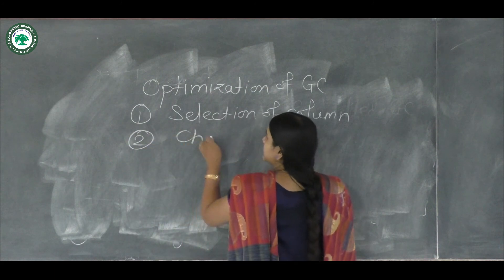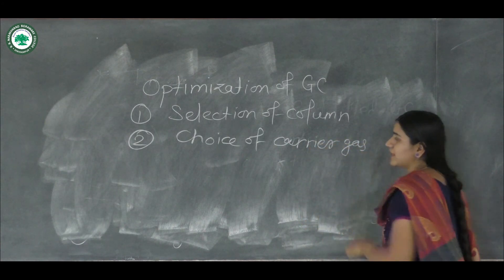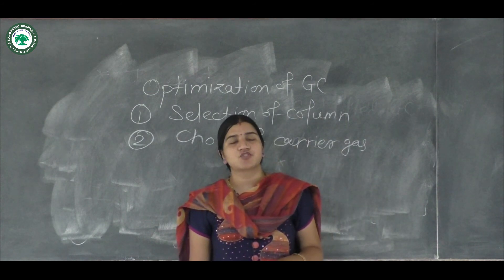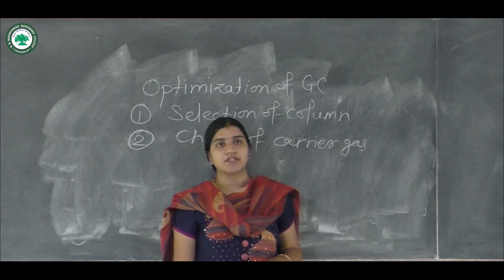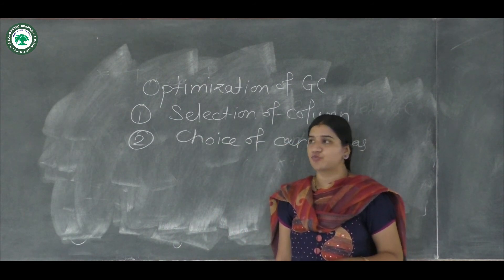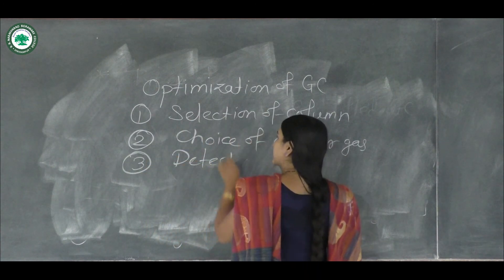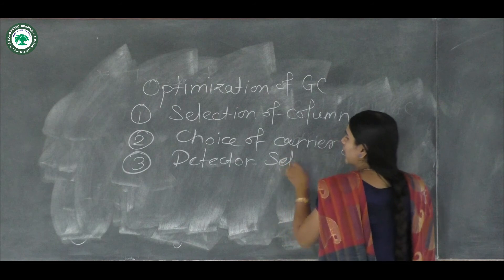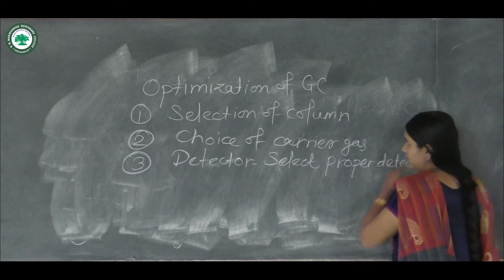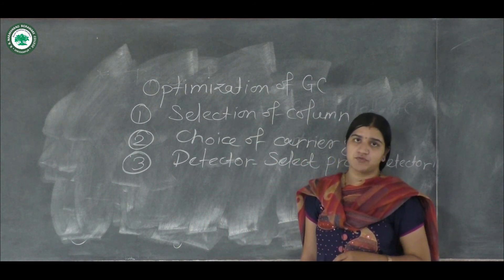The second important thing is the choice of carrier gas. The carrier gas used in GC should be inert with respect to both the stationary phase and the sample. If the carrier gas reacts with the sample, you will get extra peaks due to impurities instead of sharp peaks. The third parameter is the detector — you must select the proper detector, such as thermal conductivity detector, FID detector, or ECD detector, depending on the sensitivity of your material.